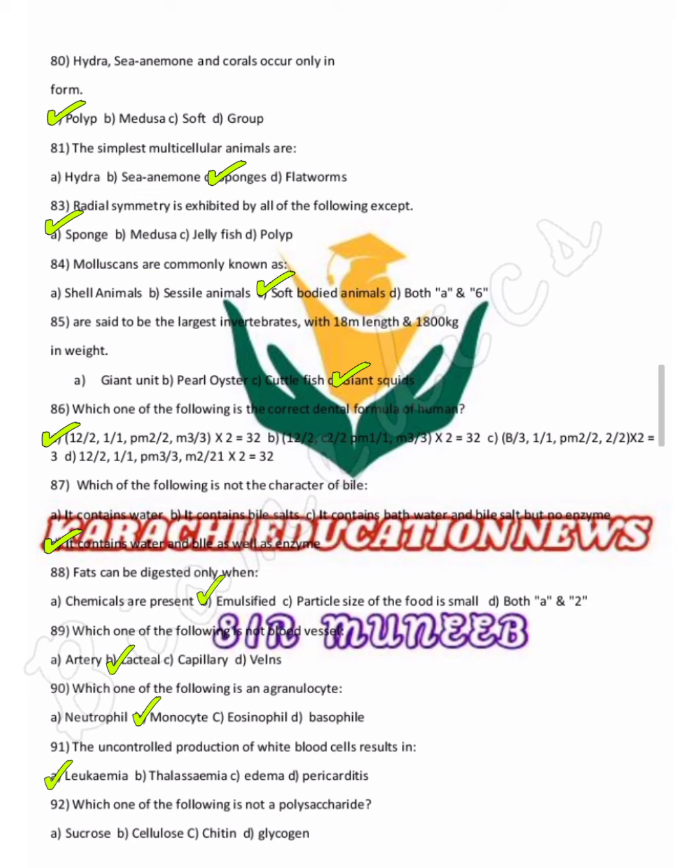Which of the following is not a polysaccharide? Cellulose, chitin, and glycogen are all polysaccharides. Chitin is confirmed as a polysaccharide.